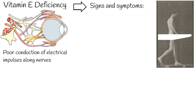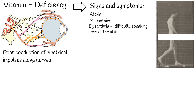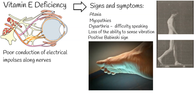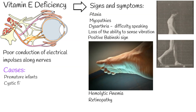Signs and symptoms of vitamin E deficiency include neuromuscular problems such as spinocerebellar ataxia and myopathies. Neurological problems may include dysarthria — difficulty speaking caused by brain damage resulting in an inability to control the muscles used in speech — as well as absence of deep tendon reflexes, loss of the ability to sense vibration and detect where body parts are in three-dimensional space, and a positive Babinski sign. Hemolytic anemia due to oxidative damage to red blood cells, retinopathy, and impairment of the immune response are also associated.